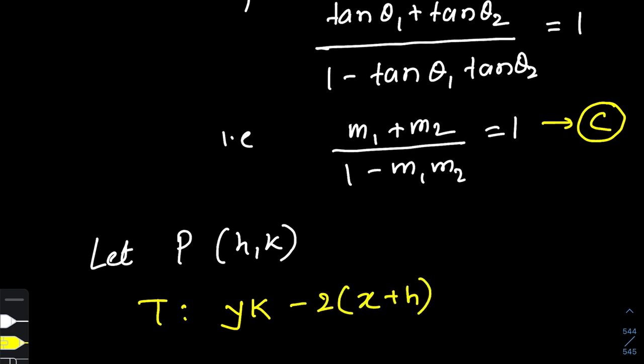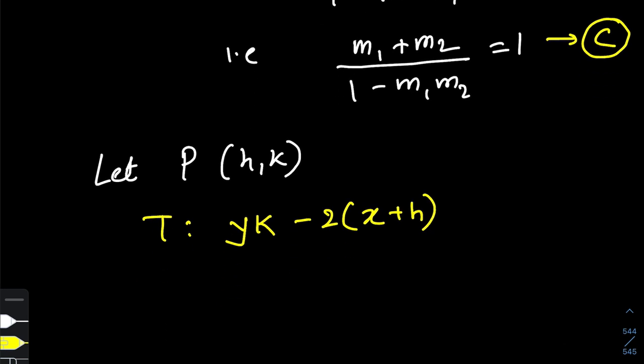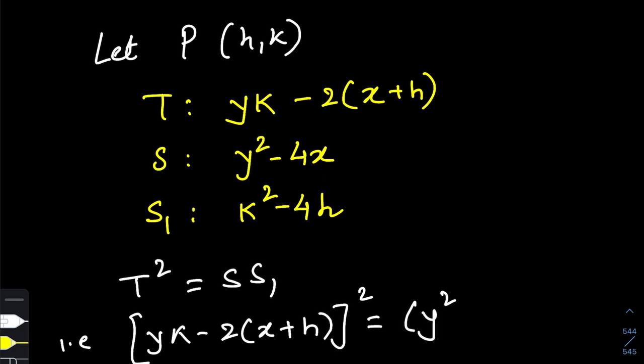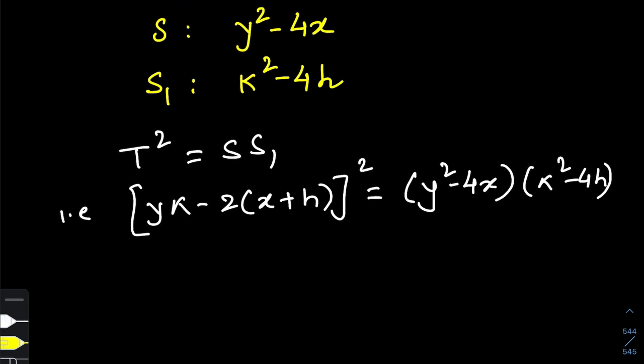What is S? S is y² - 4x. What is S₁? S₁ is k² - 4h. Now let us put this in our general form T² = SS₁, which becomes [yk - 2(x + h)]² = (y² - 4x)(k² - 4h).